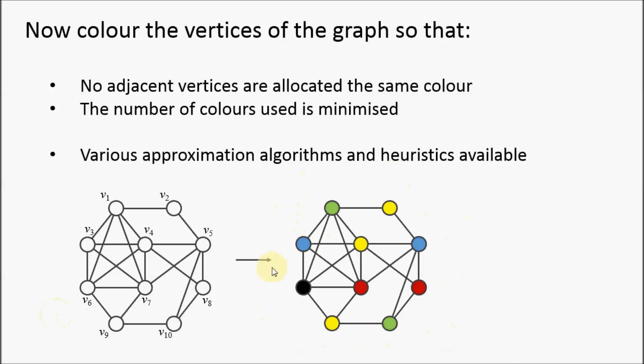Here you can see a solution to this problem. This is actually an optimal solution using five colors, and as you can see, vertices with the same colors are always non-adjacent.